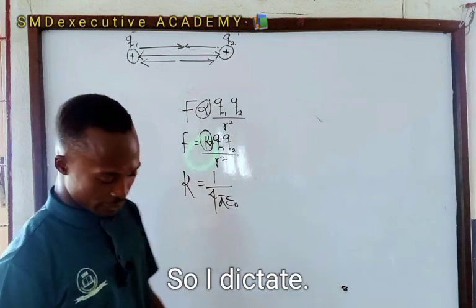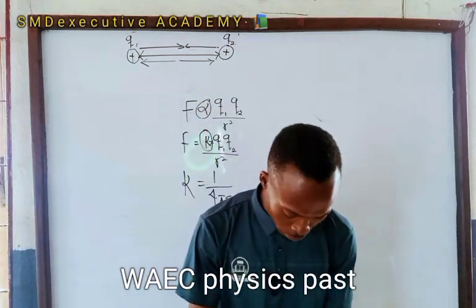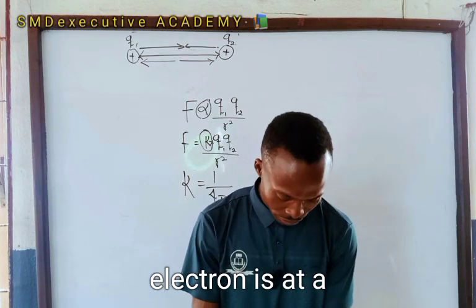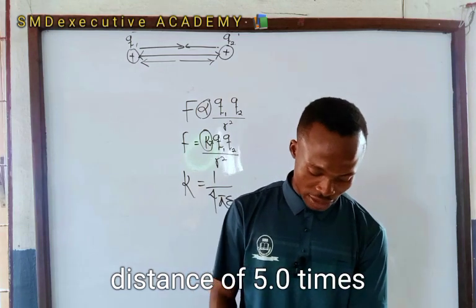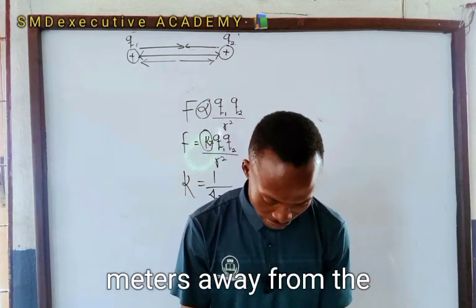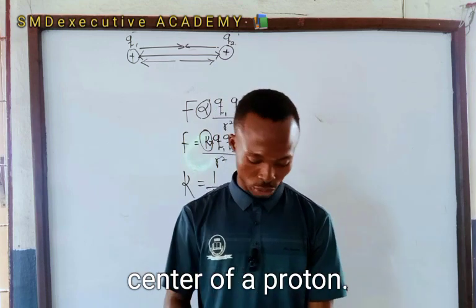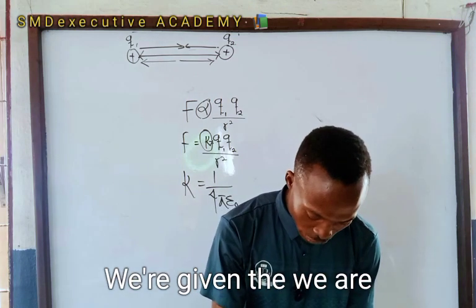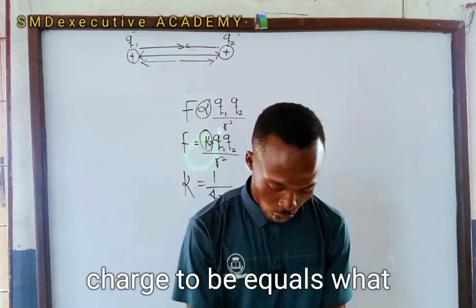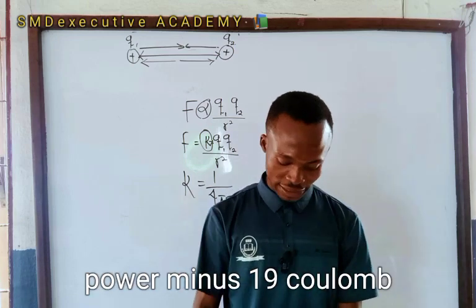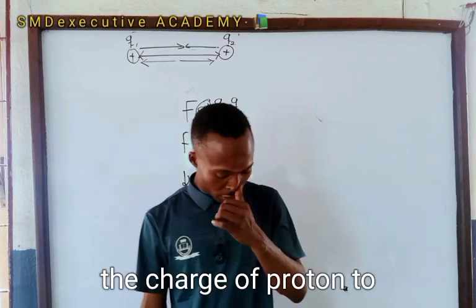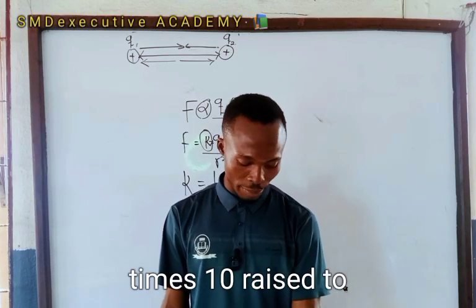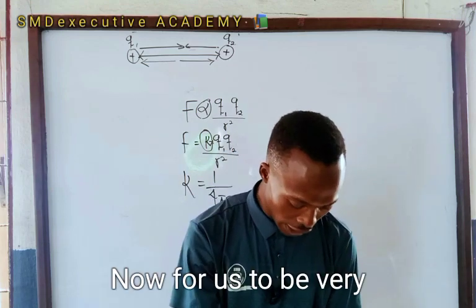The question is from the WAEC physics past question, year 2005. It states that an electron is at a distance of 5.0 times 10 to the power minus 11 meters away from the center of a proton. Calculate the electrostatic force on it. We are given the electron charge as minus 1.6 times 10 raised to power minus 19 coulombs, and the charge of the proton as plus 1.6 times 10 raised to power minus 19 coulombs.